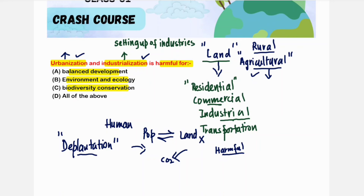Third, biodiversity conservation is affected. Birds lose their habitat when trees are cut, and water bodies are polluted through over-exploitation of natural resources. Since urbanization and industrialization are harmful in all these ways — A, B, and C — option D is the correct answer. Let's move to the next question.